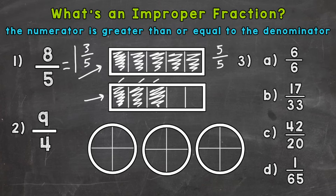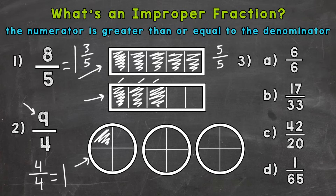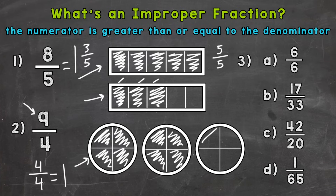I want to mention again: if we were to have 4 over 4, same number up top and below equals 1 whole. But in the case of number 2, 9 fourths, that top number is greater than the bottom, so this is going to be greater than a whole. Let's model this one. We have whole circles to the right here, and they are each cut into fourths. So we need to fill in 9 fourths: 1, 2, 3, and 4 fourths — so you can see one whole there. Then 5, 6, 7, 8, and 9. So we have 2 whole circles filled in, and then right here we have 1 fourth.